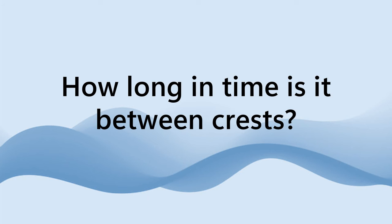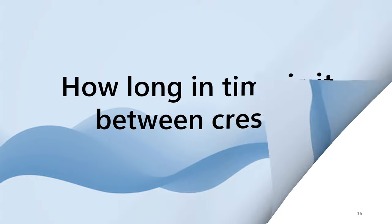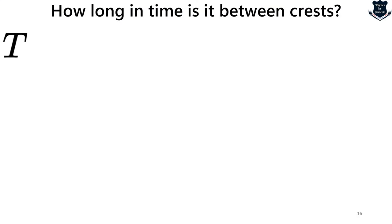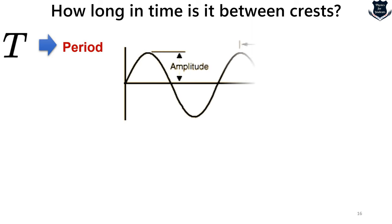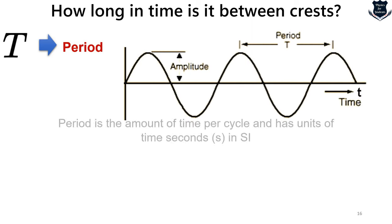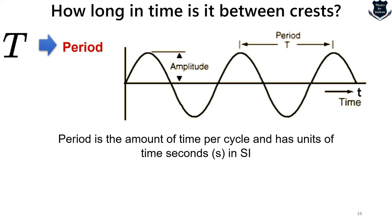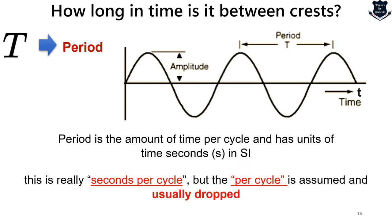The second question: how long in time is it between crests? This is measured by capital T, called the period. Period is the amount of time per cycle and has units of seconds in SI. Again, you could say it is really seconds per cycle, but 'per cycle' is assumed and dropped. That is how we measure the period.